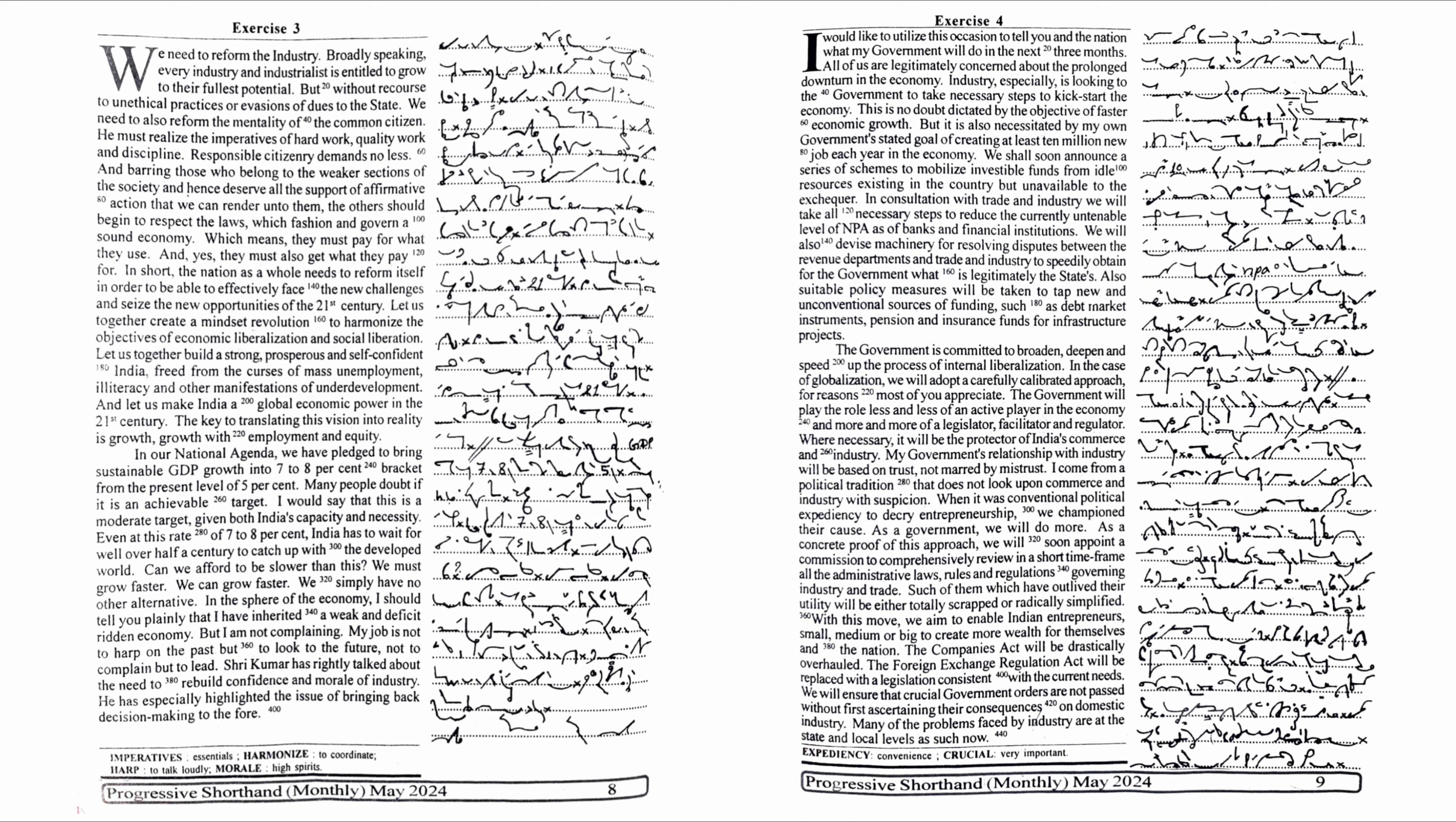In our national agenda, we have pledged to bring sustainable GDP growth into 7 to 8 percent bracket from the present level of 5 percent. Many people doubt if it is an achievable target. I would say that this is a moderate target given both India's capacity and necessity. Even at this rate of 7 to 8 percent, India has to wait for well over half a century to catch up with the developed world.